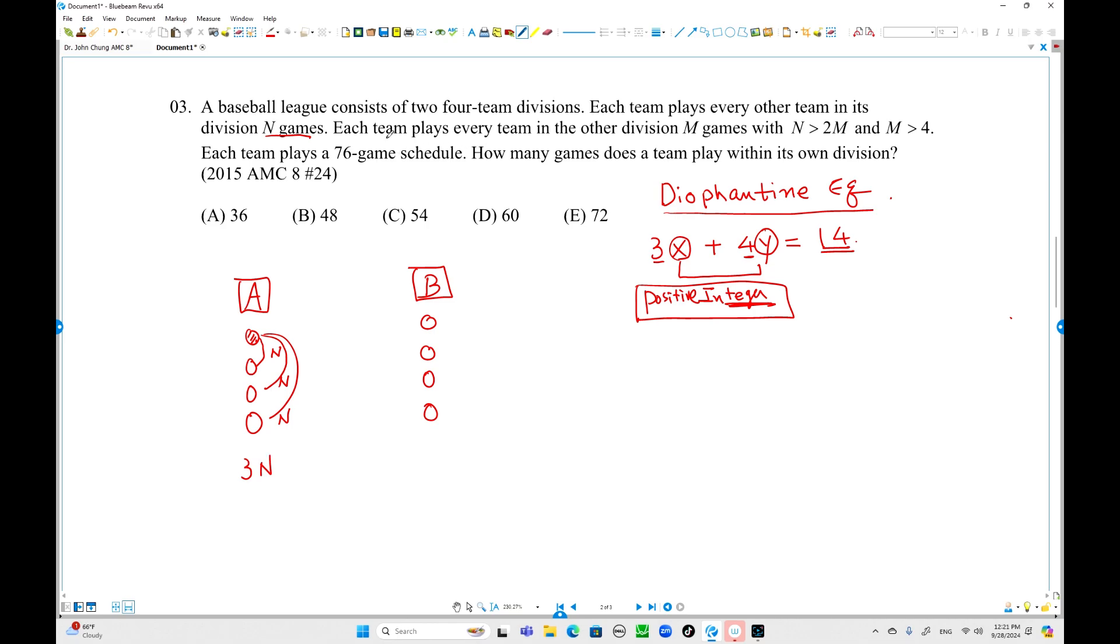Each team plays every team in the other division M games. That's four M games. There is a constraint. Total, each team plays 76 game schedules. So this is the number of games for these teams. They're going to have all 76 games scheduled. 3N plus 4M equals 76. That's the equation.